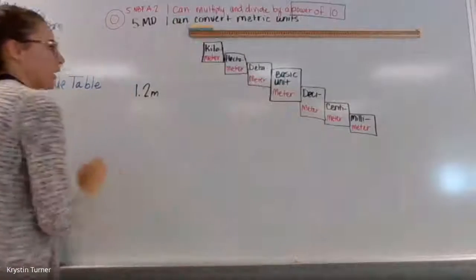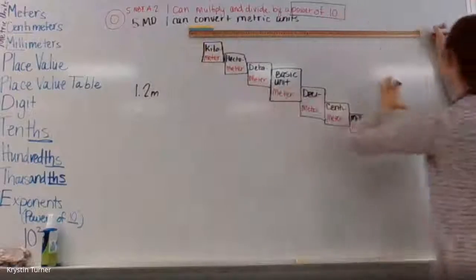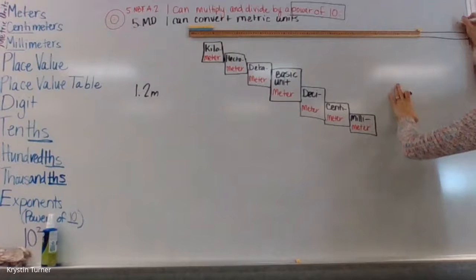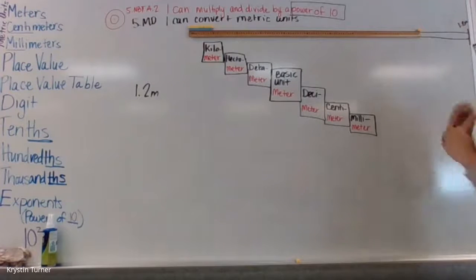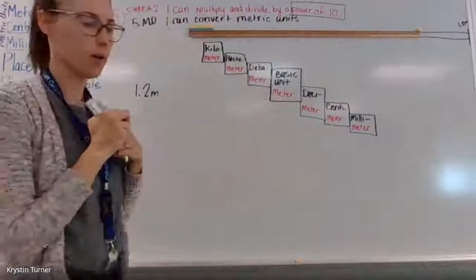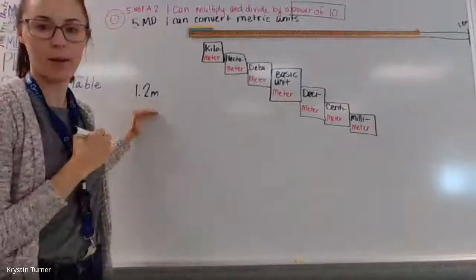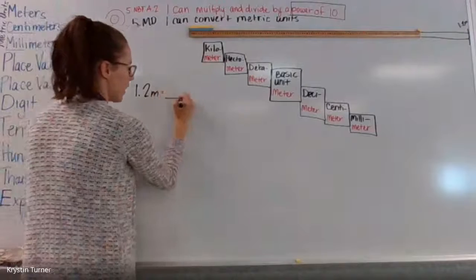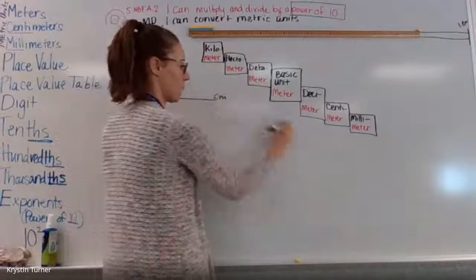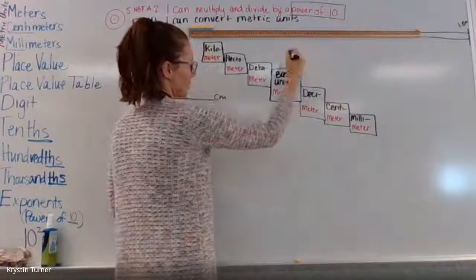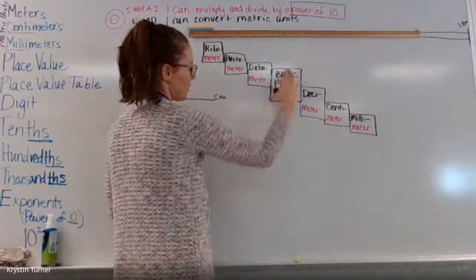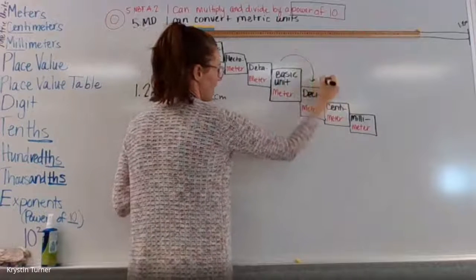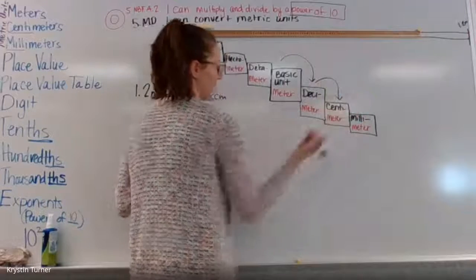I'm going to draw up here. Here's my meter stick, and then I'm just going to keep going — here would be my 1.2 meters, and I want to know how many centimeters that is. So I can write: 1.2 meters equals some number of centimeters. Now I'm going to go to my conversion chart. I see that here is my basic unit meter, and then it goes decimeter, centimeters — that would be 1, 2 jumps.